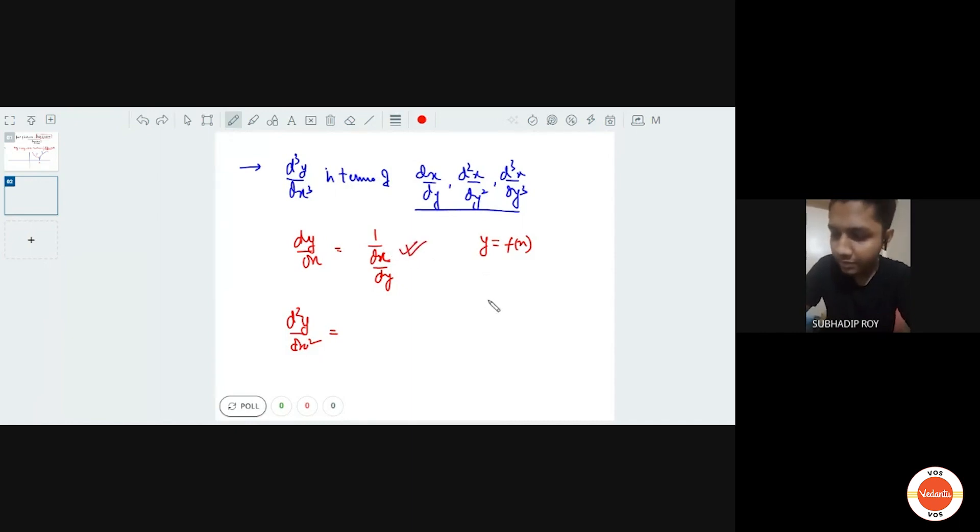Now, sir, d square y by dx square is f double dash x. And so d square x by dy square is like minus of f dash, minus of 1 by f dash x whole square into dx by dy. So we can just shift the value of f double dash x equals to d square y by dx square in f dash x. So I got d square x by dy square equals to minus 1 upon f dash x whole square into f double dash x into dx by dy. So we can just put the values of f double dash and f dash in terms of dy by dx and d square y by dx. So we will get the relation in terms of d square and like dy by d cube by df. Then we can just differentiate again.